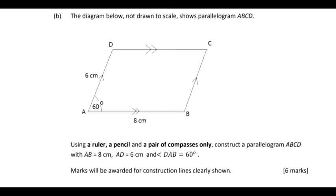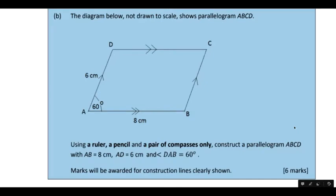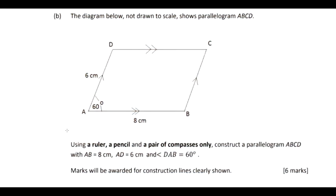The question says: the diagram below, not drawn to scale, shows parallelogram ABCD. Using a ruler, pencil, and a pair of compasses only, construct parallelogram ABCD with AB equals eight centimeters, AD equals six centimeters, and angle DAB equals 60 degrees. This is very important — marks will be awarded for construction lines clearly shown.